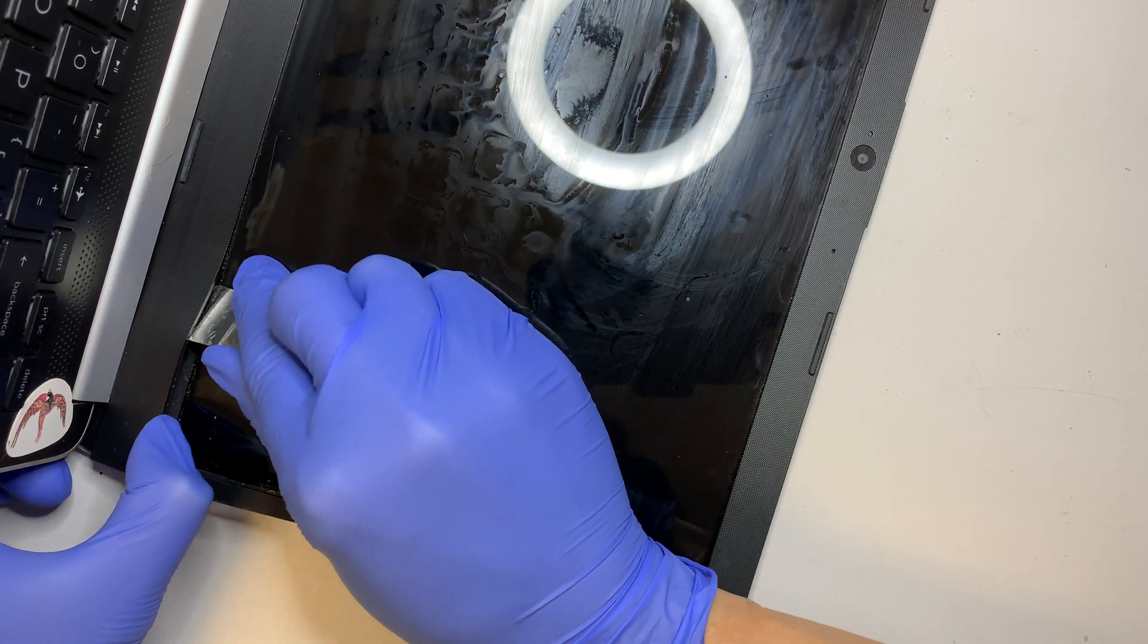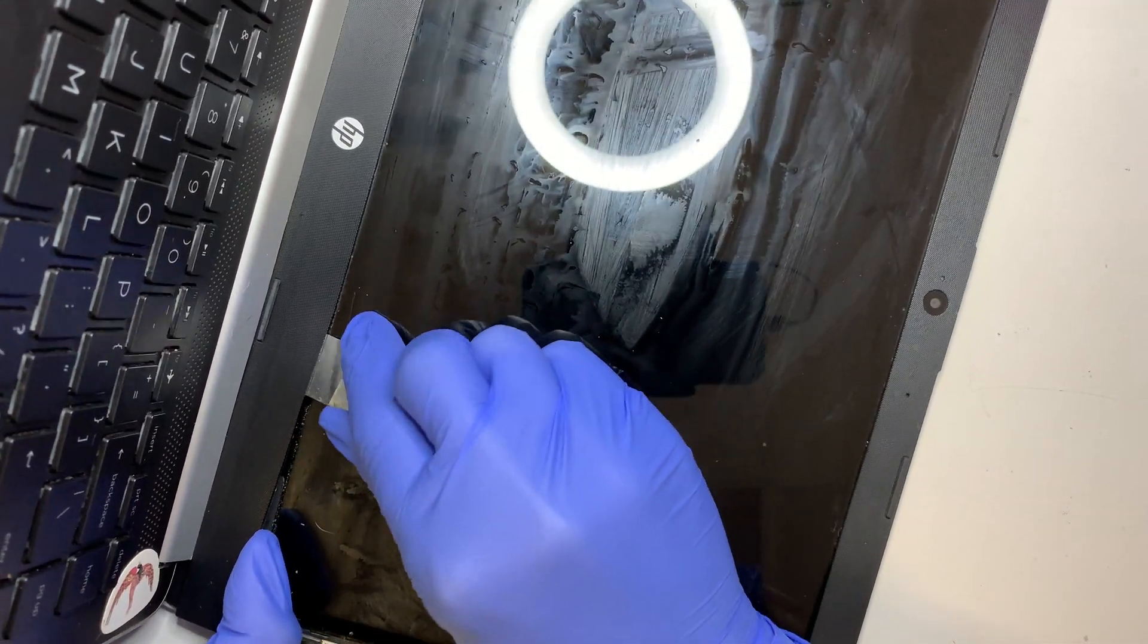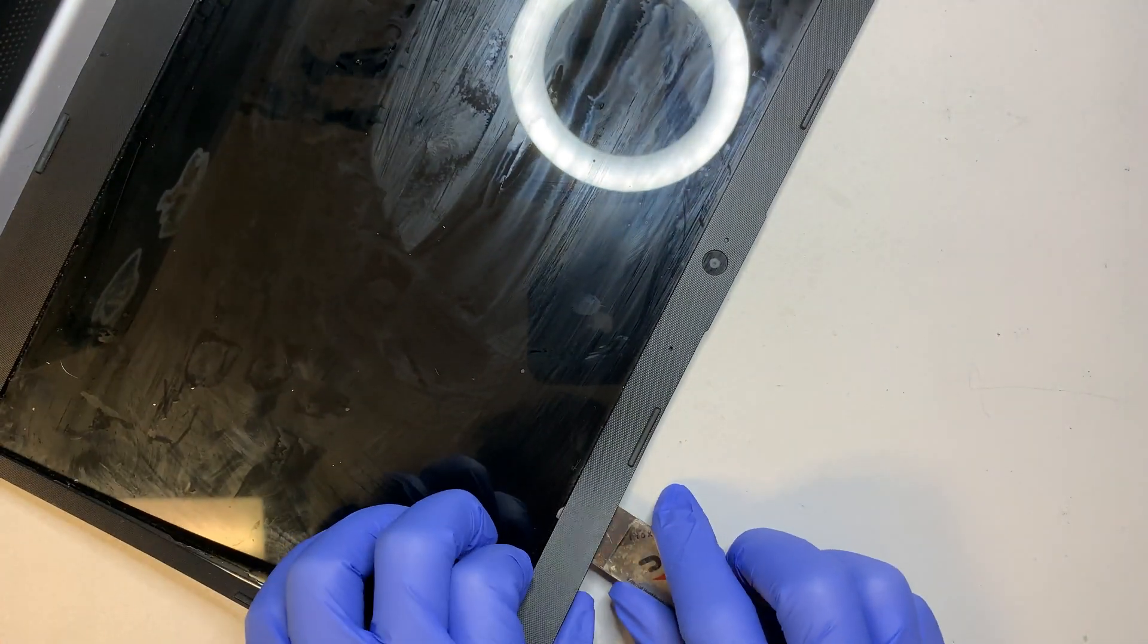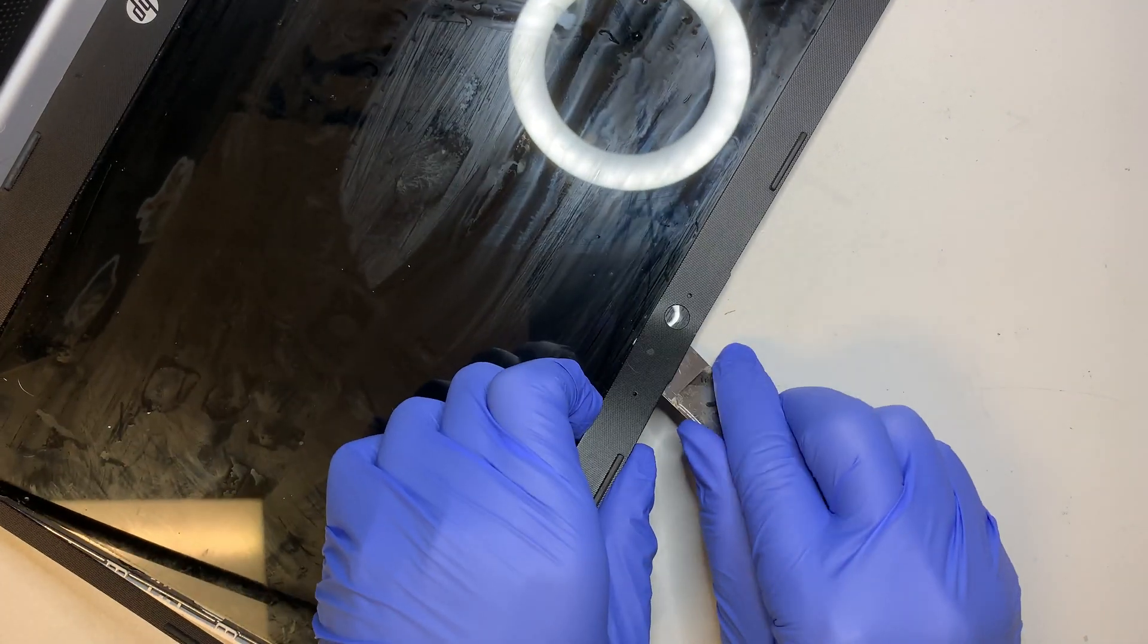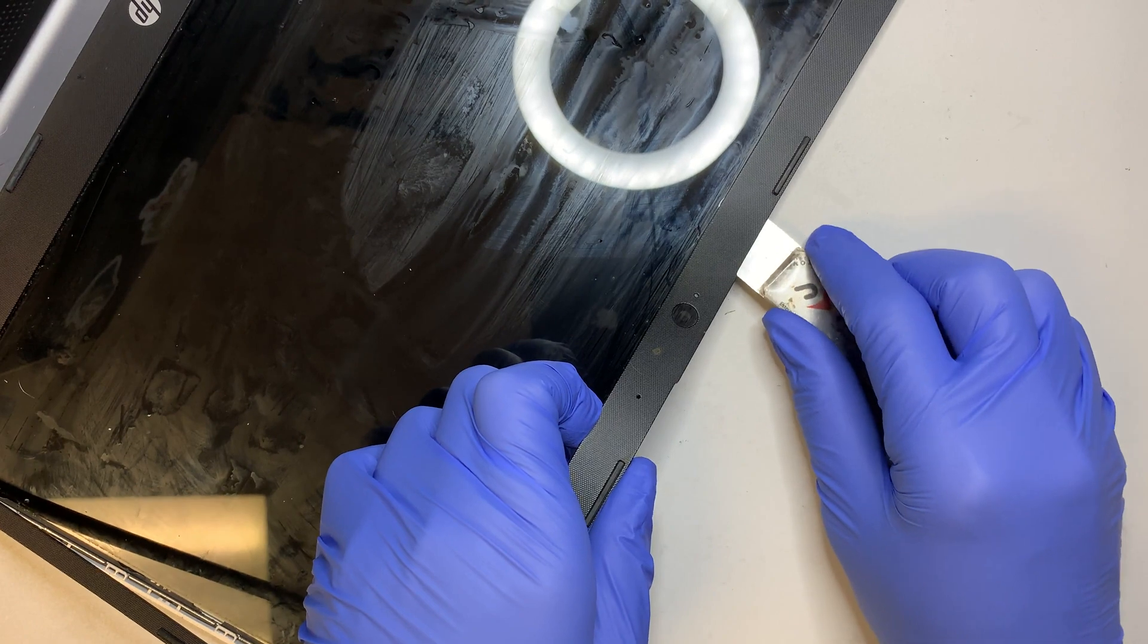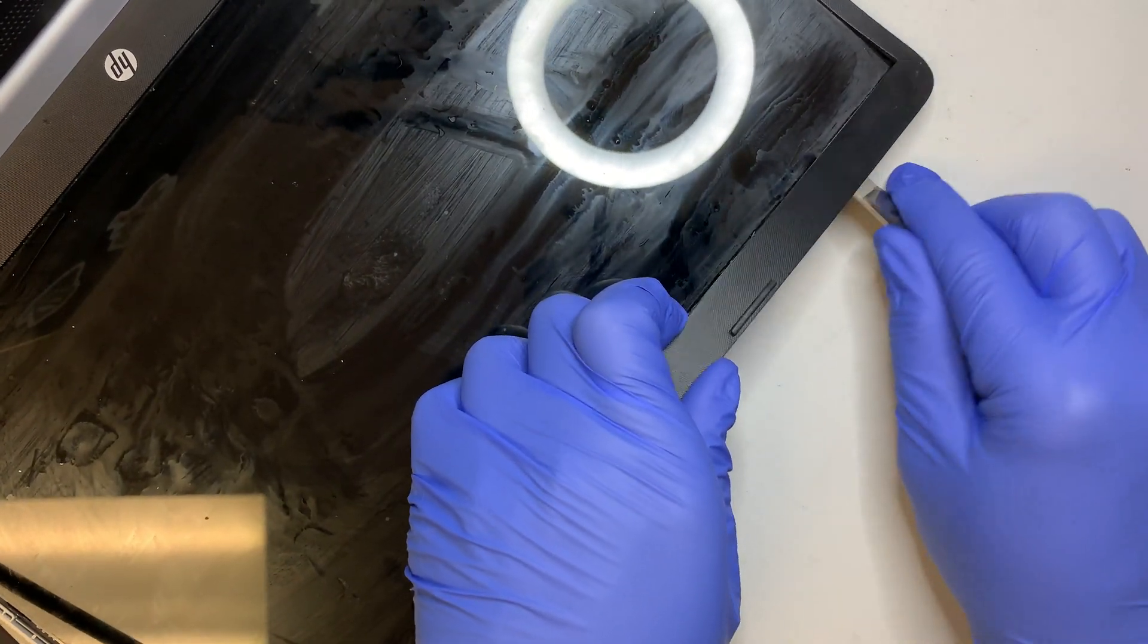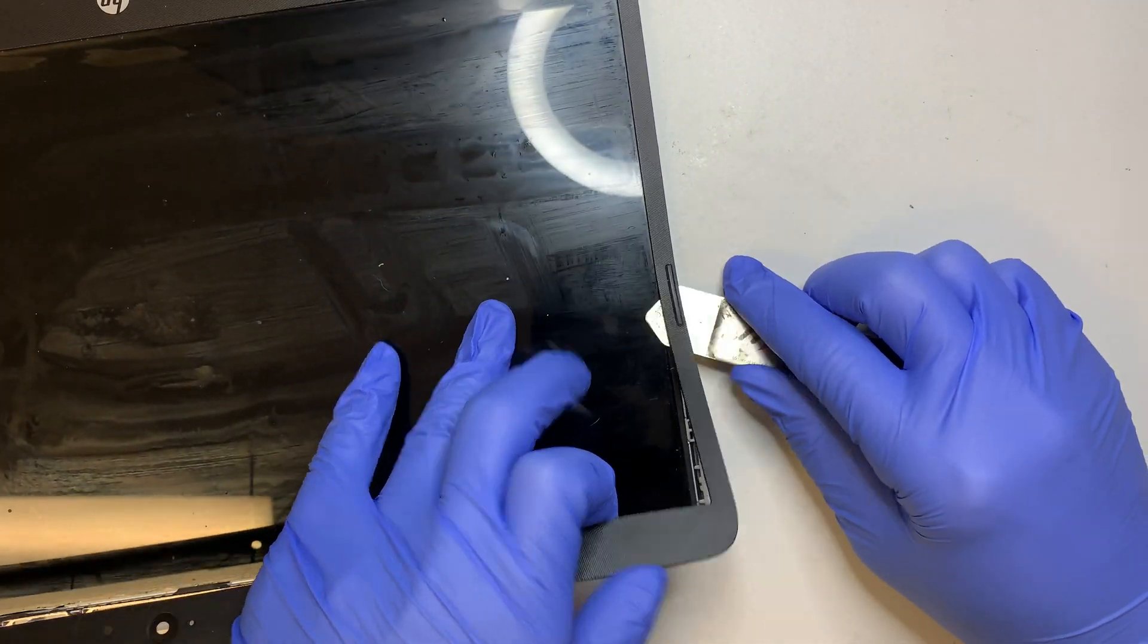Just kind of tuck it underneath the glue and slowly separate them as I go along. Come back here on the front. While you're doing this you can actually hear the crackling noise. That's because the tape is separating away from the bezel.